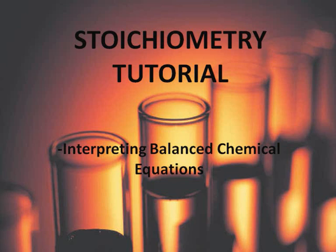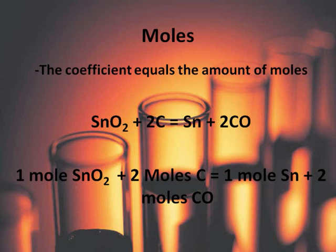Hi everybody, this is a stoichiometry tutorial about interpreting balanced chemical equations. The first kind of interpretation we can make is in terms of moles, this is the easiest one. The coefficient or the number in front of the substance in the equation equals the amount of substance or moles.